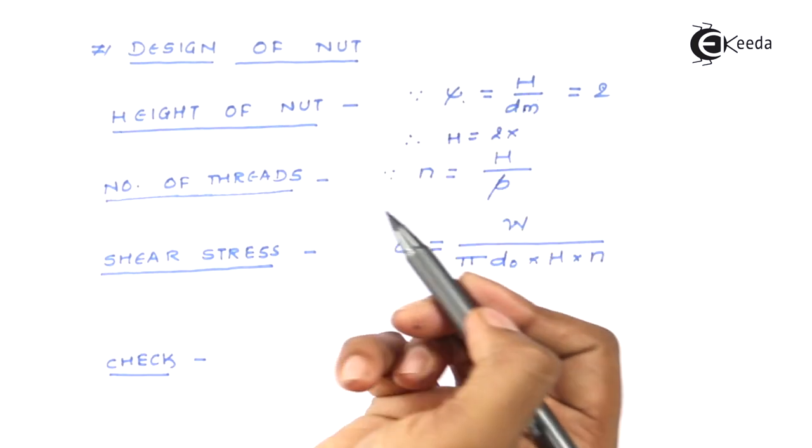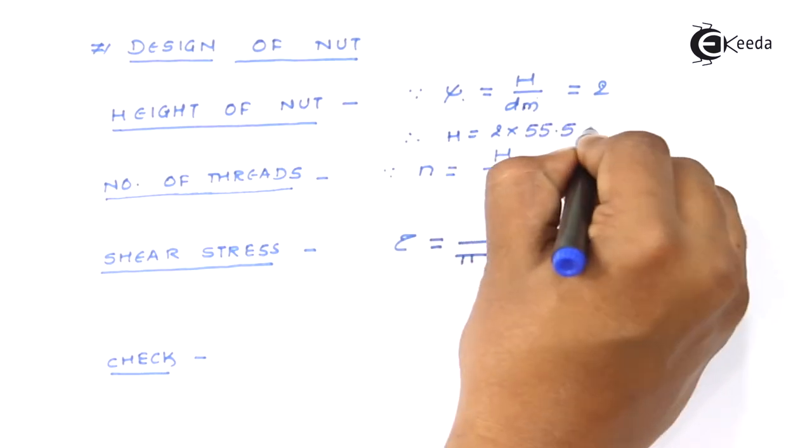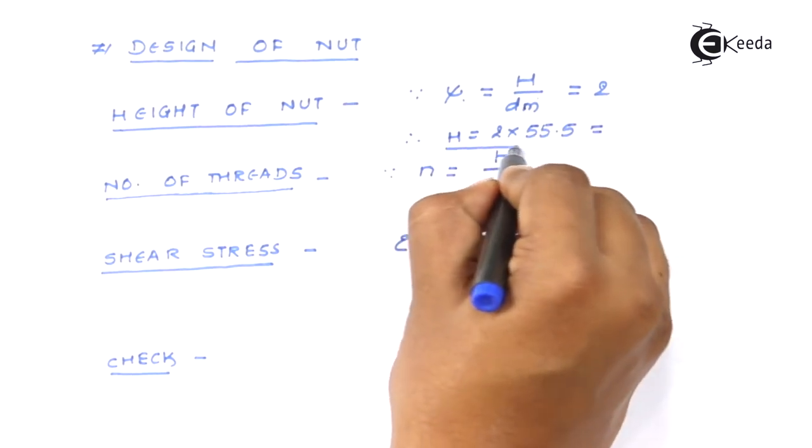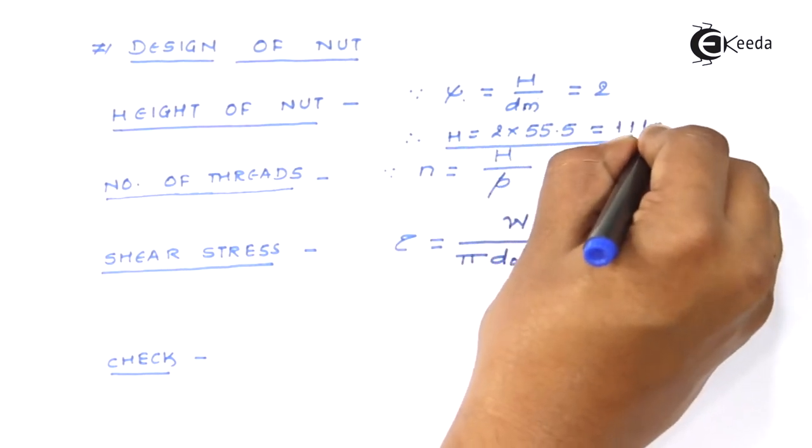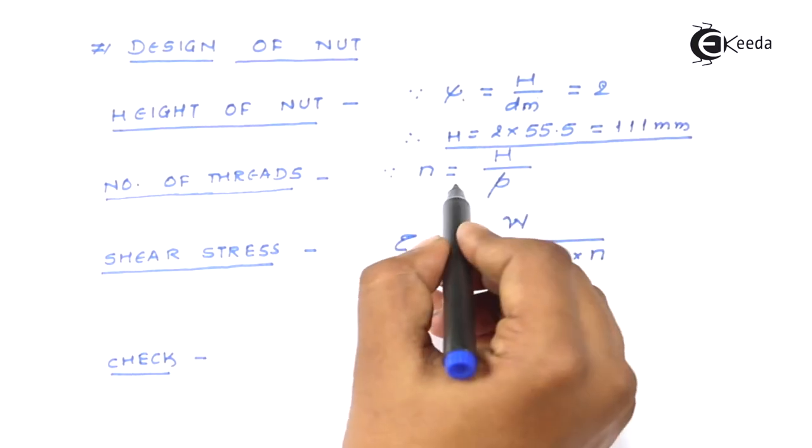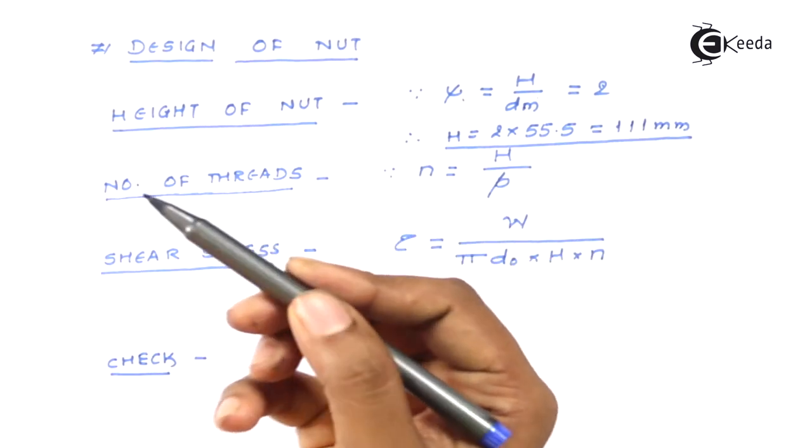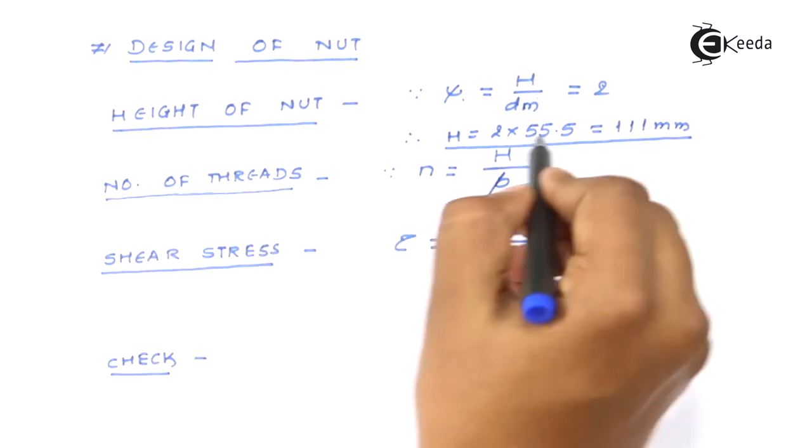And that's why H will be found out using dm by psi, so it becomes 2 into the value of dm we already have is 55.5 and hence the height of nut comes out to be 111 millimeter. So that will be the height of the nut.